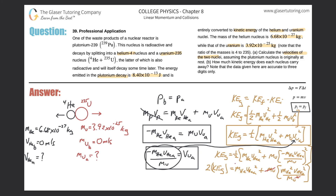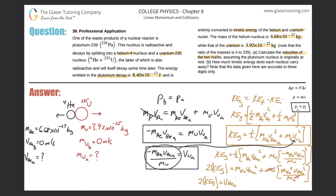Multiplying both sides by two to get rid of the half: two times the kinetic energy gain equals M_He times V_He_A squared plus M_U times M_He squared times V_He_A squared all over M_U squared. We can cancel one M_U, leaving M_He squared over M_U. Now I have two terms with a common variable, so I factor out V_He_A squared: two times kinetic energy gain equals V_He_A squared multiplied by the mass of helium plus the mass of helium squared all over the mass of uranium.